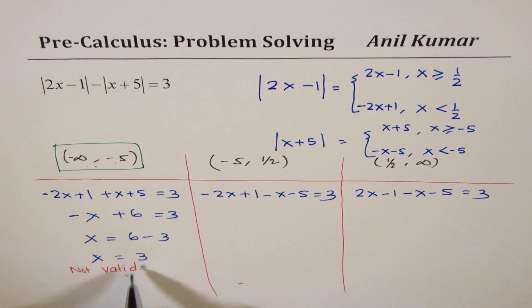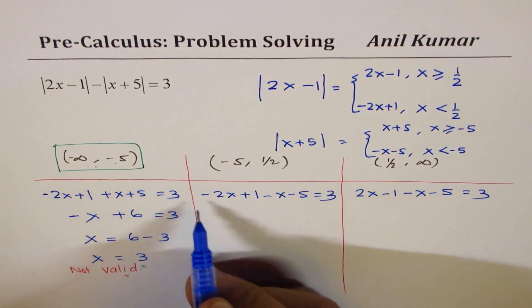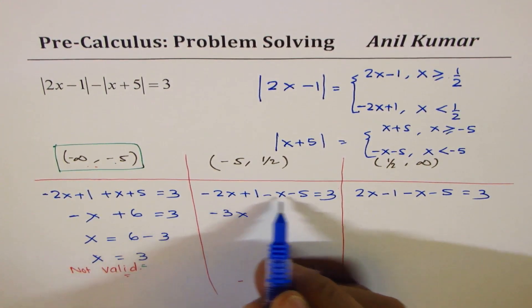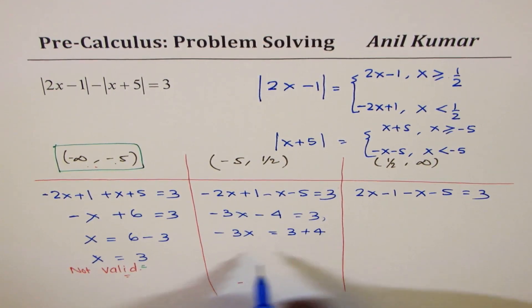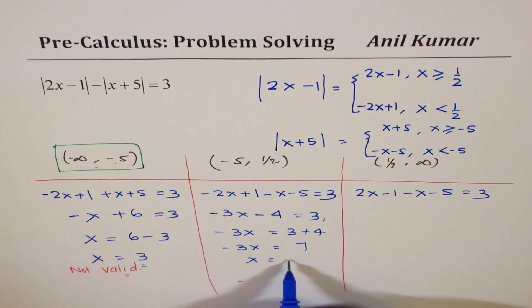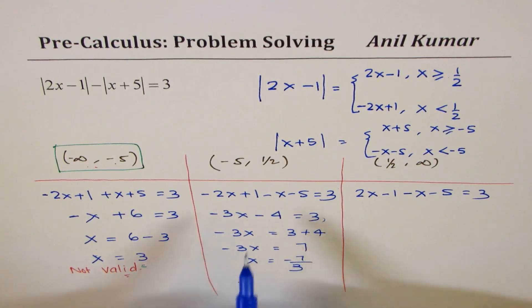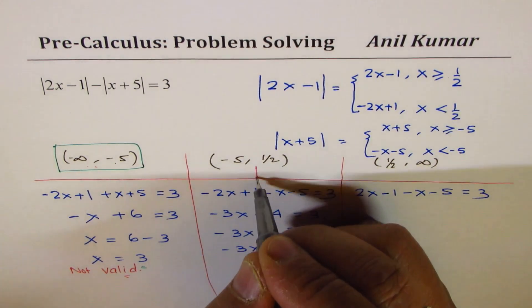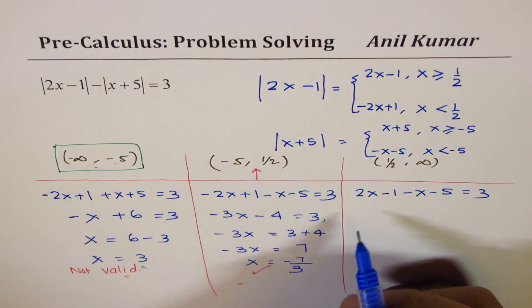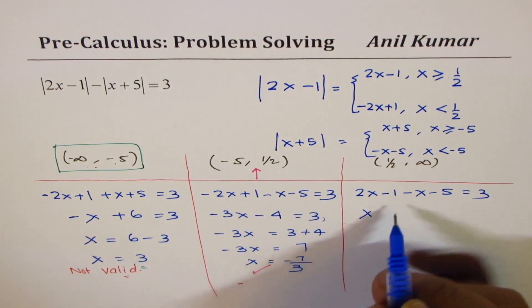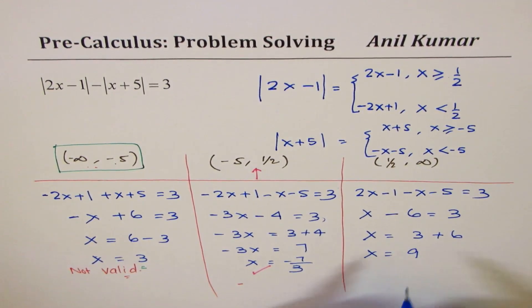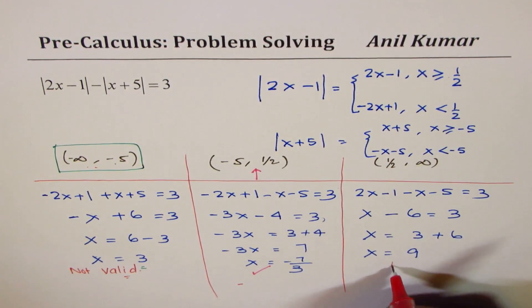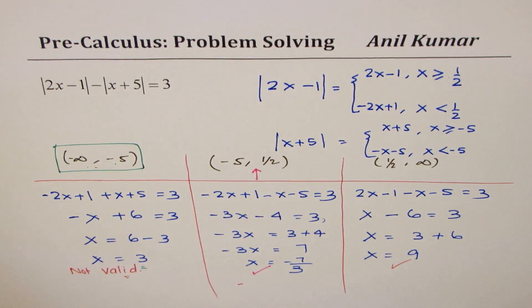For the second interval (−5 ≤ x < 1/2): the equation becomes (−2x + 1) − (x + 5) = 3, giving −3x − 4 = 3, so −3x = 7, meaning x = −7/3. Since −7/3 lies within the interval [−5, 1/2), this is a valid solution. For the third interval (x ≥ 1/2): (2x − 1) − (x + 5) = 3 gives x − 6 = 3, so x = 9. Since 9 ≥ 1/2, this is also a valid solution.